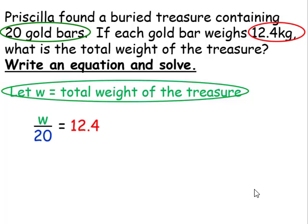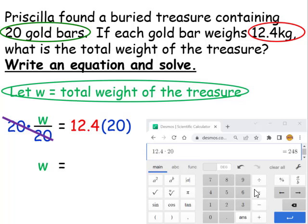In this case, since my divisor is 20, I'm going to multiply both sides by the divisor of 20. The 20s will cancel. This will give me w is equal to, and I'll just use my calculator, and that's 248. Since we're dealing with a word problem, we have to label. w is the weight of the treasure. We were working with kilograms, so our answer is 248 kilograms.